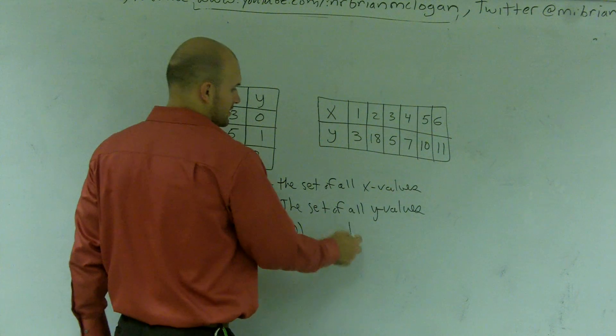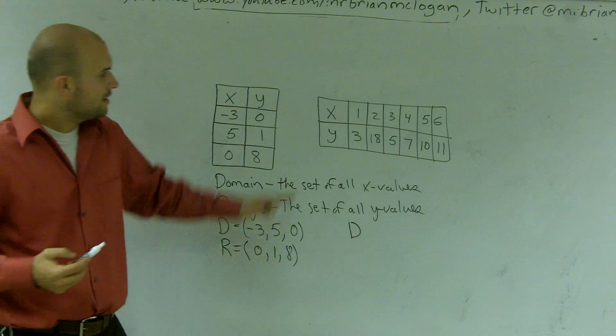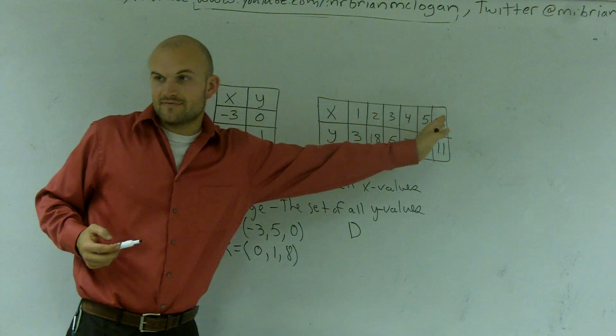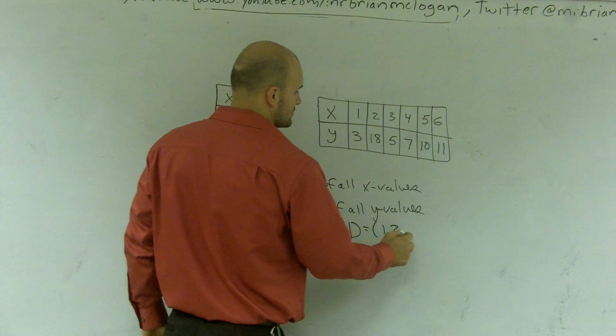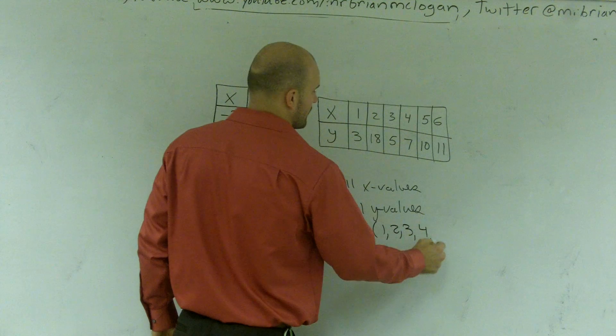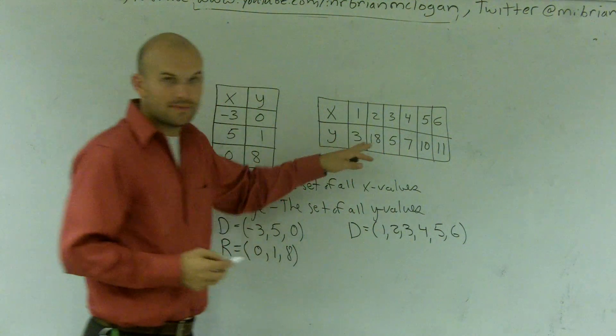Then, over here for this table, my domain is going to be all of my x values over here. So it would be 1 through 6: 1, 2, 3, 4, 5, 6.